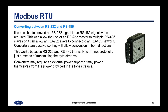It is possible to convert an RS-232 signal to an RS-485 signal when required. This can allow the use of an RS-232 master to multiple RS-485 slaves, or allow an RS-232 slave to connect to an RS-485 network. Converters are passive so they will allow conversion in both directions. This works because RS-232 and RS-485 themselves are not protocols — just a means of transmitting the byte streams. Converters may require an external power supply or may power themselves from the power provided in the byte streams.